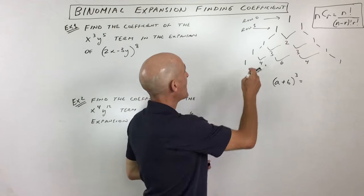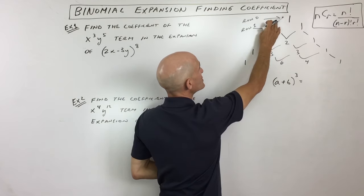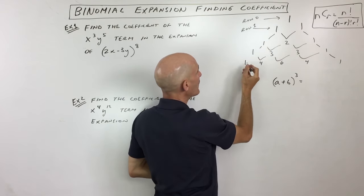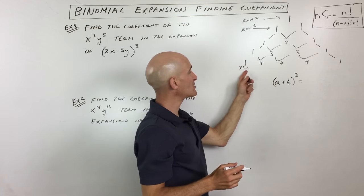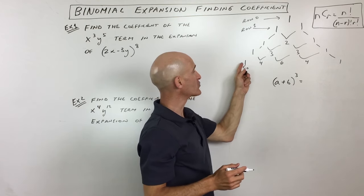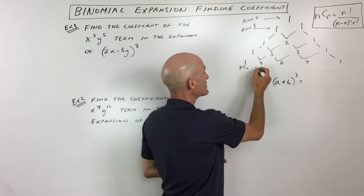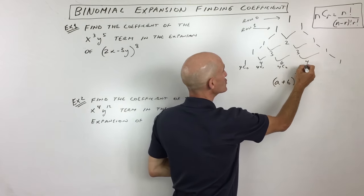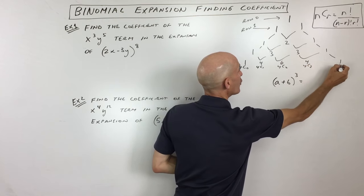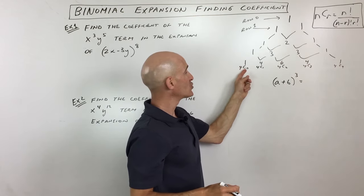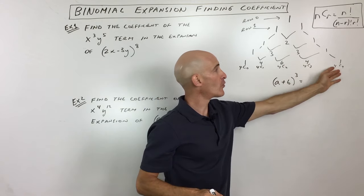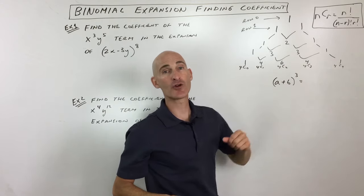And so, for example, if I'm down here on the fourth row - notice it starts at row 0, 1, 2, 3, 4 - this number right here is actually 4 choose 0. So how many ways are there to choose 0 out of 4? There's only one way to do that. And the same thing here. This is 4 choose 1, 4 choose 2, 4 choose 3, all the way over here to 4 choose 4. So it's always the row number choose 0, all the way up through the row number choose whatever row number you're on.